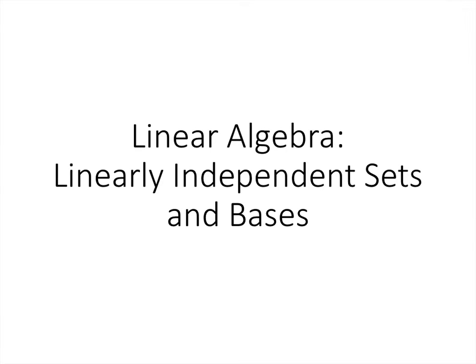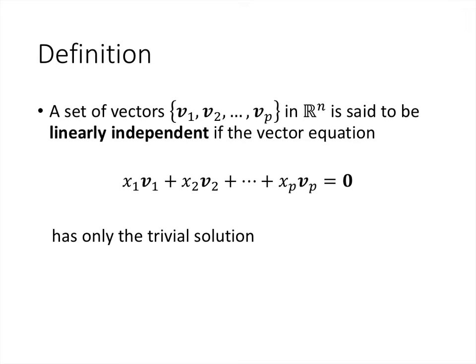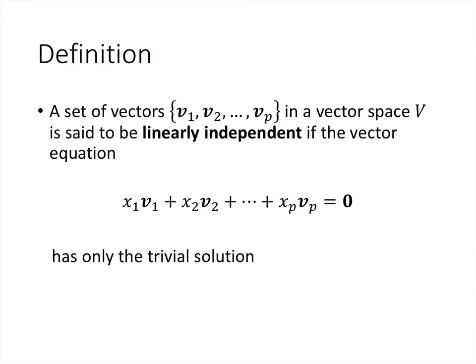In this lecture, we're going to talk about linearly independent sets and bases. Hopefully you recall that we talked about what it means for a set of vectors to be linearly independent when we're talking about Rn — that vector equation only has the trivial solution. The only way to make that linear combination of vectors equal zero is if we make all of the coefficients zero. We can use the same definition no matter what vector space we're talking about; it doesn't have to be Rn.